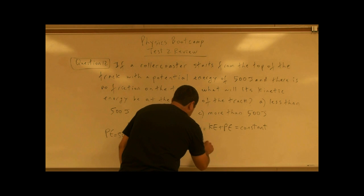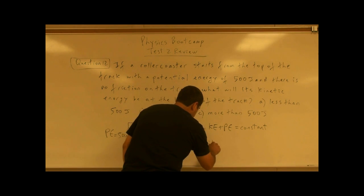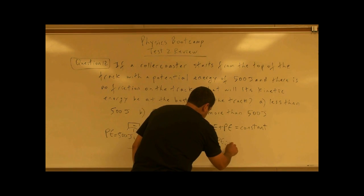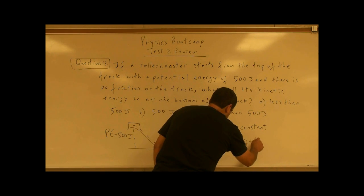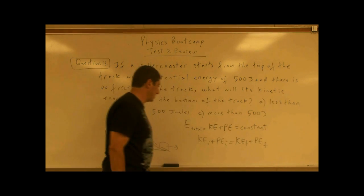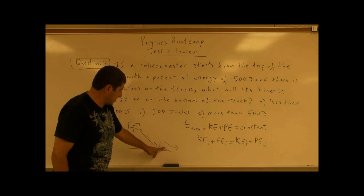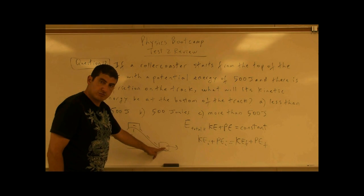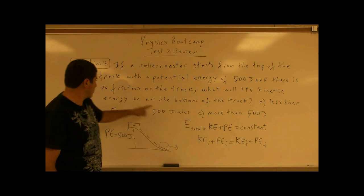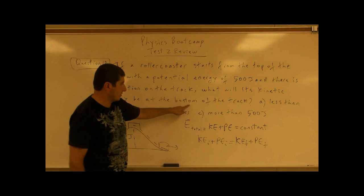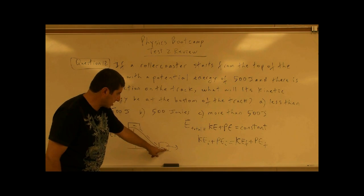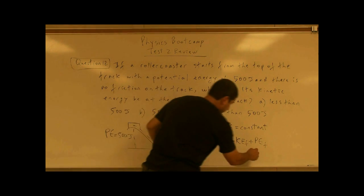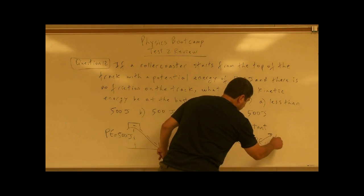That means the initial kinetic energy plus the initial potential energy must equal the final kinetic energy plus the final potential energy. So, by the time the roller coaster is at the bottom of the track, its energy will be at the bottom of the track.